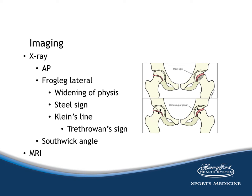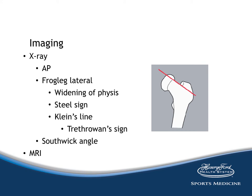A widened appearance of the physis speaks for itself, which is why I like to have both hips viewed on the AP projection. The Steel sign is a crescent-shaped area of increased density that overlies the metaphysis adjacent to the physis on the AP film. Klein's line is drawn across the superior margin of the femoral neck — in a normal situation it should cut through the superiormost portion of the epiphysis. When the epiphysis drops below Klein's line, that is a positive Trethowan sign, consistent with SCFE.